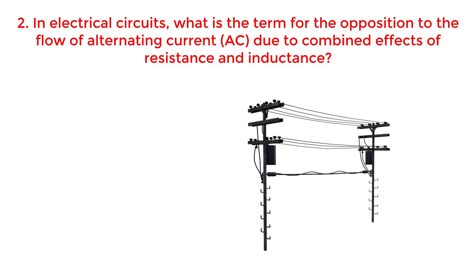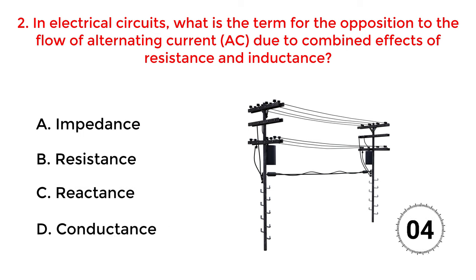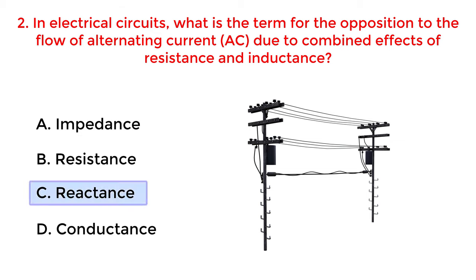In electrical circuits, what is the term for the opposition to the flow of alternating current due to the combined effects of resistance and inductance? A. Impedance. B. Resistance. C. Reactance. D. Conductance. The correct answer is option C: Reactance.